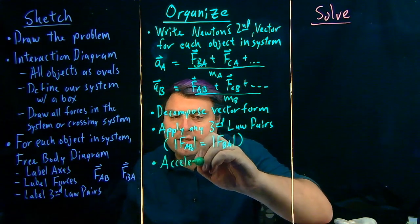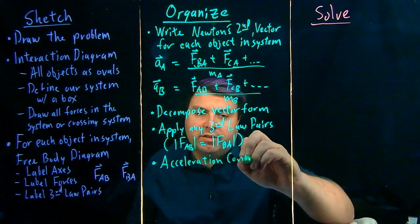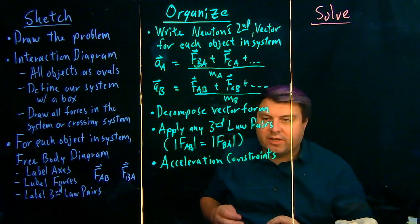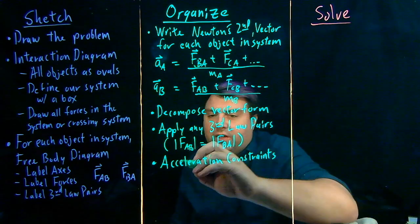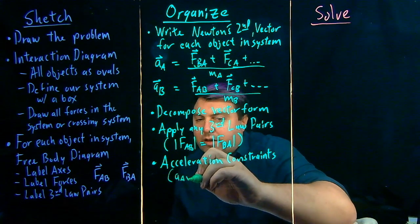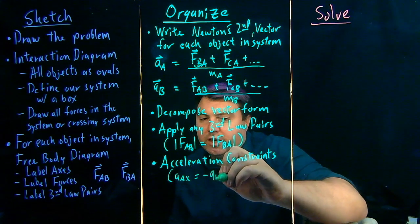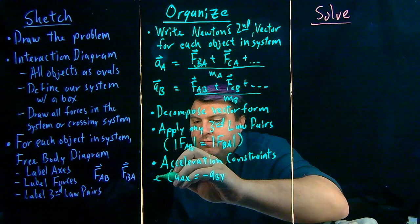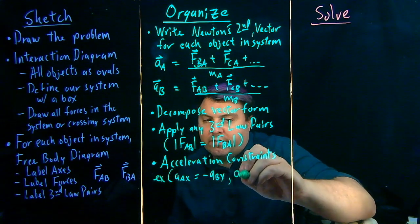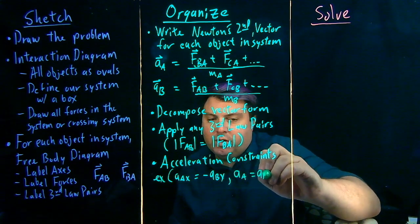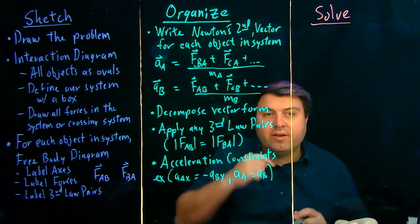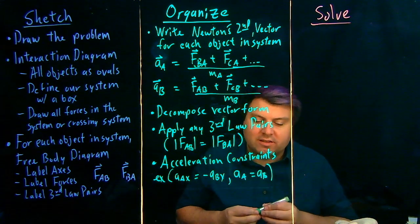Our last thing that we want to do is set acceleration constraints. For our acceleration constraints, this could be something like AAX equals negative ABY, or we just have AA equals AB, something of this sort, whatever we know. And again, we have another video talking entirely about acceleration constraints.